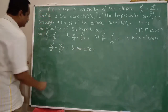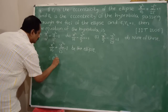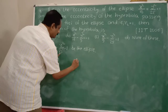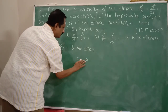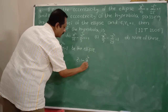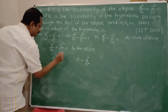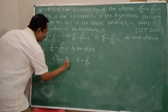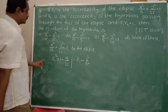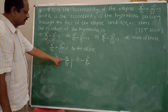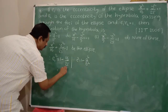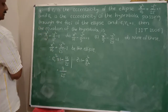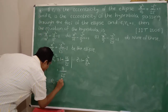So e1 is the eccentricity of the ellipse. Here, since 16 is less than 25, we use the formula e1² = 1 − (a² / b²). With a² = 16 and b² = 25, we get e1² = 1 − 16/25 = 9/25. Therefore, e1 = 3/5.